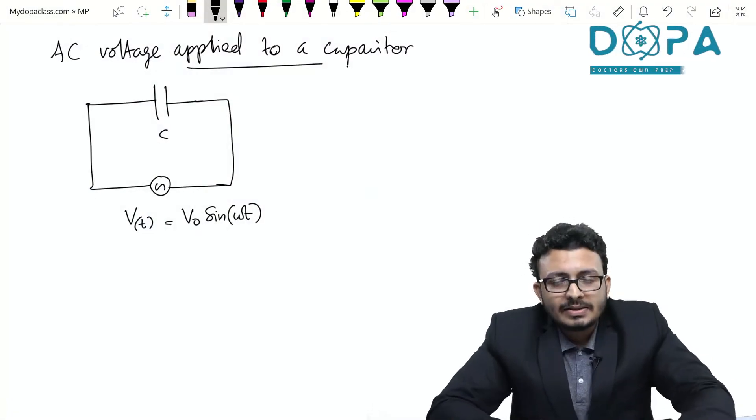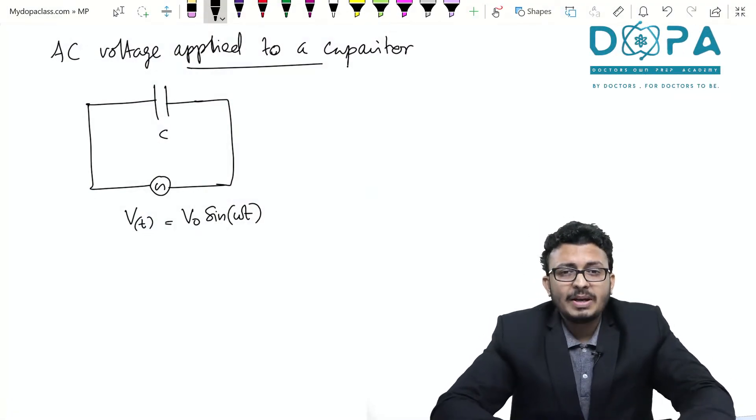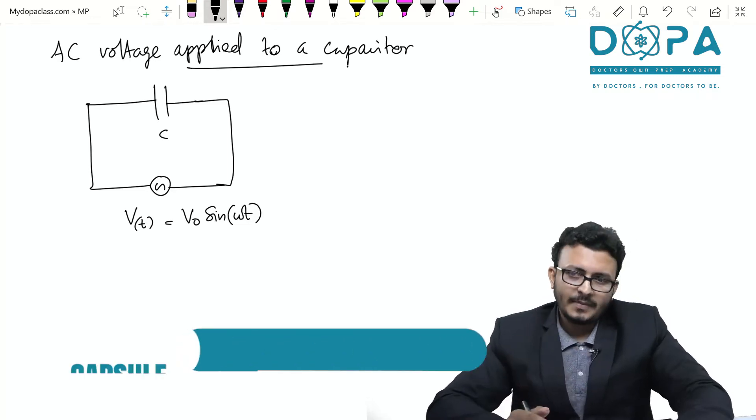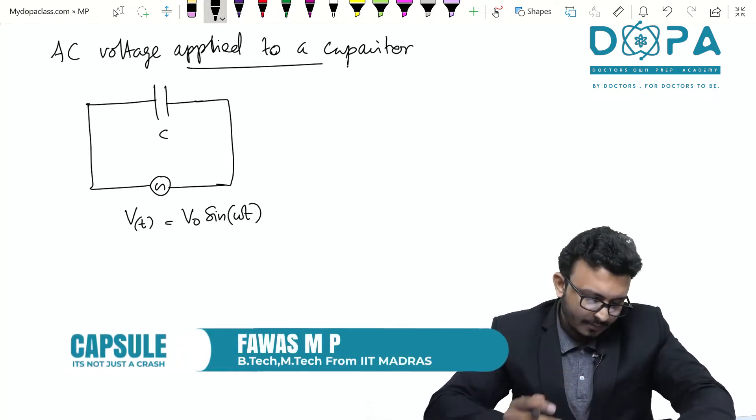What happens when you apply an AC voltage to a capacitor of capacitance C? Let's find out. I have a figure here.